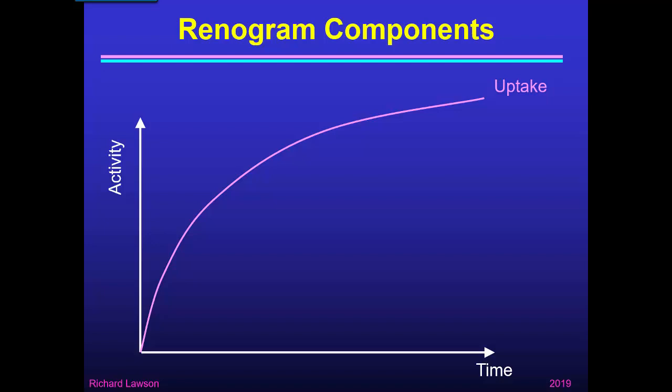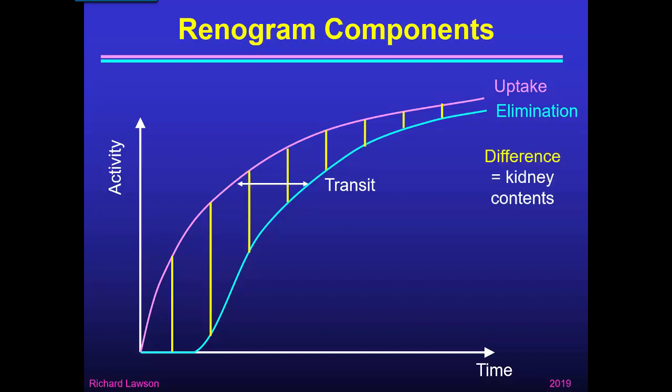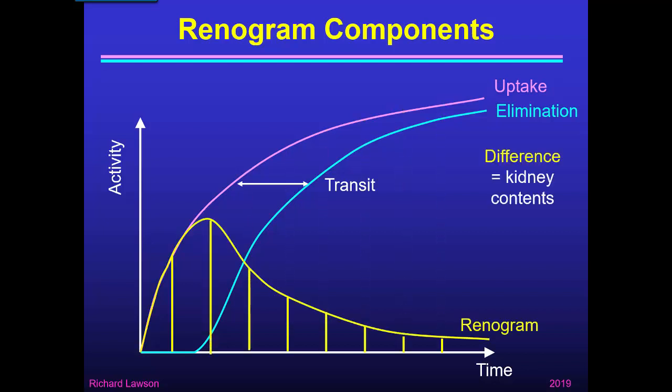Now in a normal kidney, if there's just a simple delay between what comes in and what comes out, the elimination — what comes out — is just a delayed version of the uptake curve, with the time between them being the transit time through the tubules. So if we want to know what is left in the kidney, it's the difference between what went in and what came out. The difference, shown by these yellow bars, is the kidney contents or the renogram curve. So this is yet another model showing what the shape of the renogram curve represents.